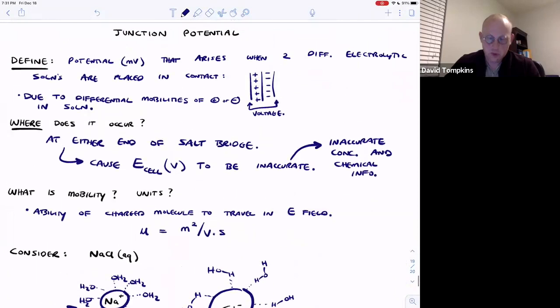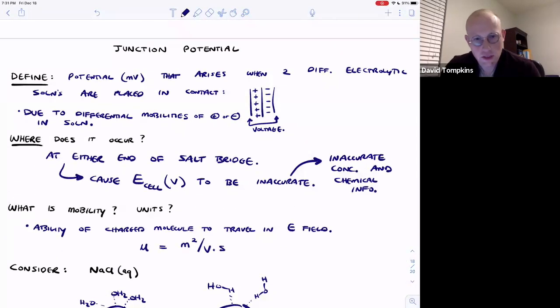So for more practice with junction potential, you can visit the multiple choice in unit four, or in other words the electrochemistry unit of my analytical course guide, and that's available at chemguides.com.